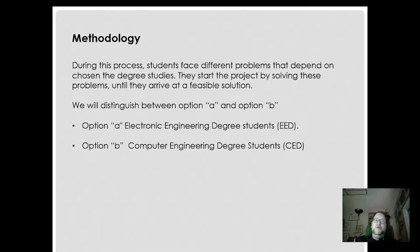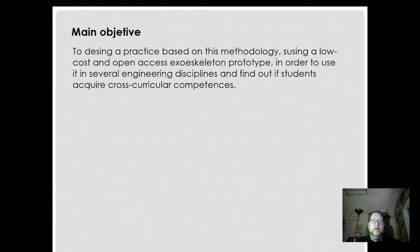During this process, students face different problems depending on their chosen degree. They work on the project by solving these problems until they reach a feasible solution. We distinguish between Option A — Electronic Engineering Degree Students — and Option B — Computer Engineering Degree Students — to design a practice based on this methodology, using a low-cost and open-access exoskeleton prototype in order to use it in several engineering disciplines and find out if students acquire cross-curricular competences.